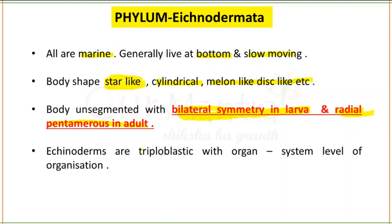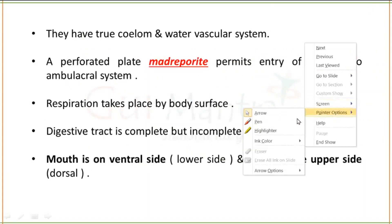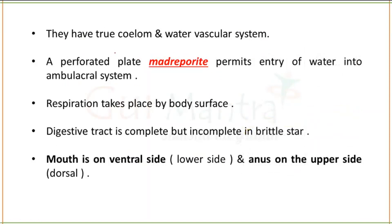Echinodermates are triploblastic, with organ system level of organization. They have a true coelom and water vascular system. The water vascular system is the distinctive feature. A perforated plate called the madreporite permits entry of water into the ambulacral system.